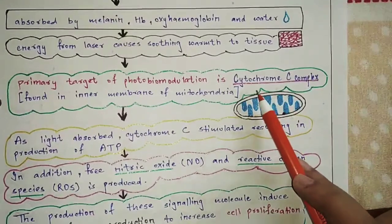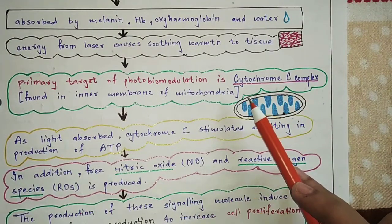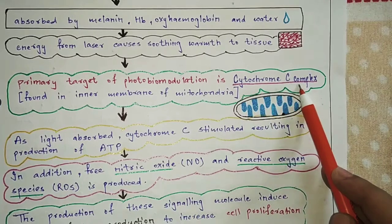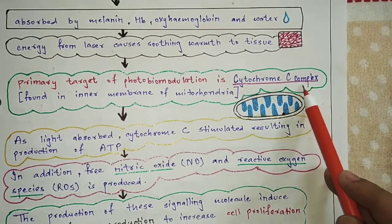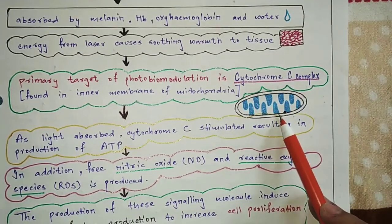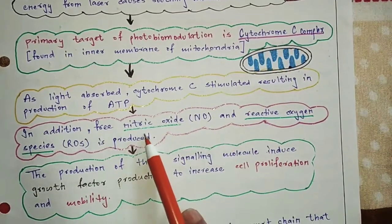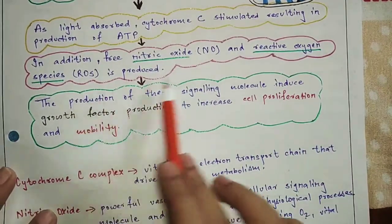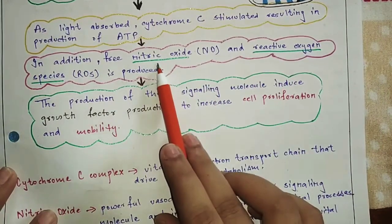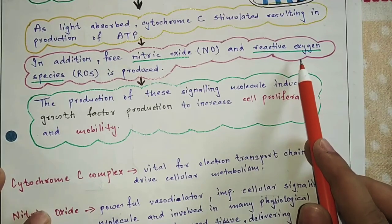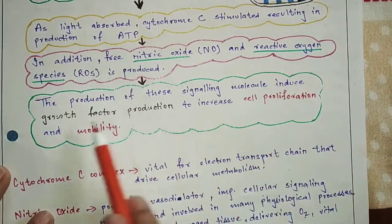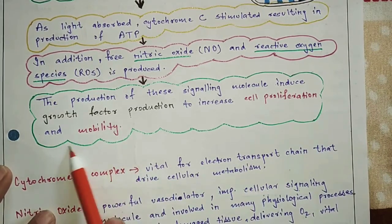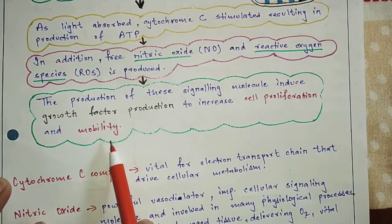When laser light penetrates our body's cells, the target is the mitochondria. The inner membrane contains the cytochrome C complex. Laser light stimulates this cytochrome C complex, producing reactive oxygen species and nitric oxide — both are signaling molecules. When these signaling molecules are produced, they induce growth factor production to increase cell proliferation and mobility.